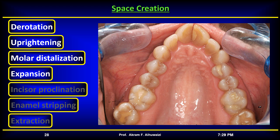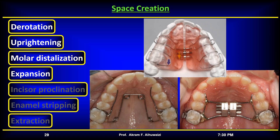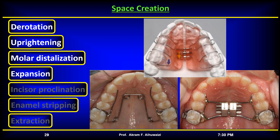Space can also be created by expanding the upper arch laterally. Expansion should ideally only be undertaken when there is a crossbite; expansion without a crossbite may increase the risk of instability or perforation of the buccal plate. Approximately 0.5 mm of space is gained for each 1 mm of posterior arch expansion. Expansion of the lower arch may be indicated if there is a lingual crossbite or scissorbite of the lower premolars and molars.